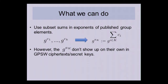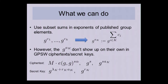But the thing is, g^(a_k) elements don't show up on their own in GPSW ciphertexts and secret keys. In the ciphertext, g^(a_k) is masked by s that also appears as g^s. And the secret key has g^(a_k) masked by r_k that appears as g^(r_k). So you might think that maybe this masking is enough to hide the subset structure a little more — and that kind of turns out to be the case.